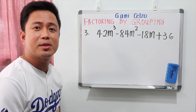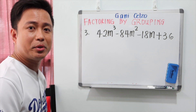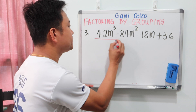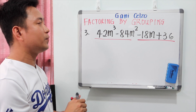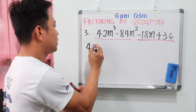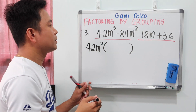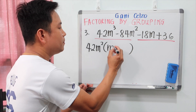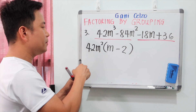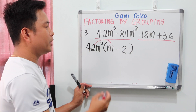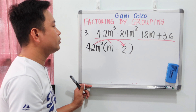After the two examples, factoring by grouping is not difficult at all. Let's try example 3. For the first group, the GCF is 42m squared. Inside the parentheses we have m minus 2, because 42m squared times m gives 42m to the third, and 42m squared times negative 2 gives negative 84m squared.